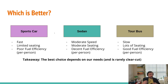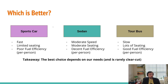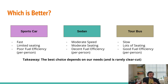So which of these is the best? Just like we'll see in a lot of cases with respect to performance, the answer is going to be: it depends. It really depends on what our goal is. If we want to get from point A to point B the fastest, maybe the sports car is the best option. But if we want to get the most people from point A to B in the shortest amount of time, it might be something like a tour bus. And if our goal is somewhere in the middle, it might be something like a sedan.